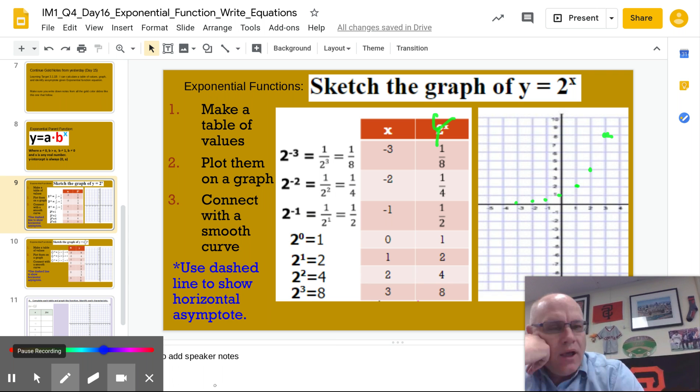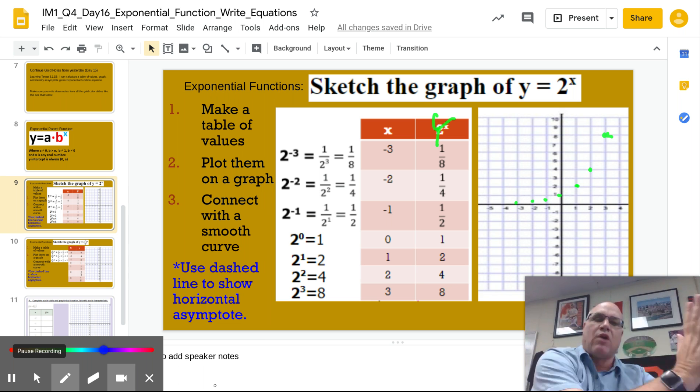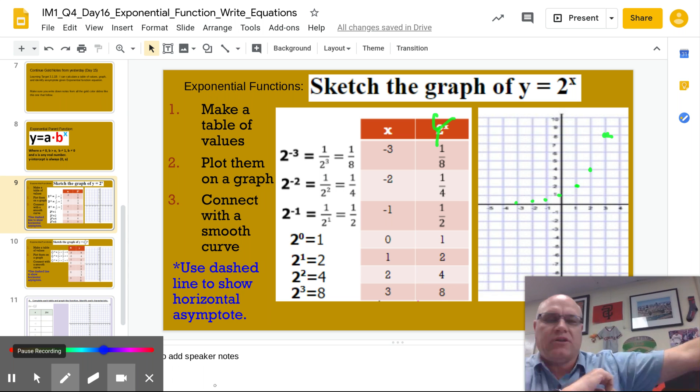So it's going to be a curve that gets extremely steep, but even though it gets extremely steep, it's still going to the right. So x is still approaching positive infinity. Now what happens when we go left?